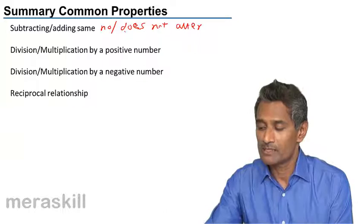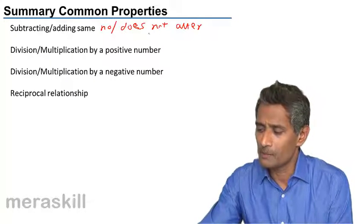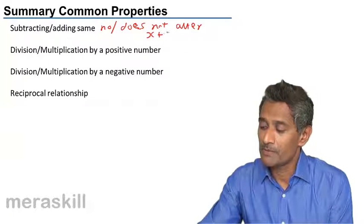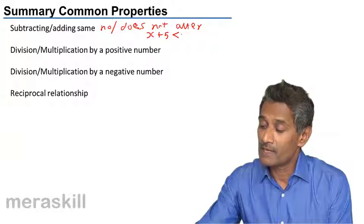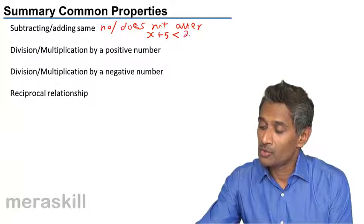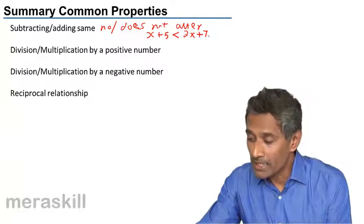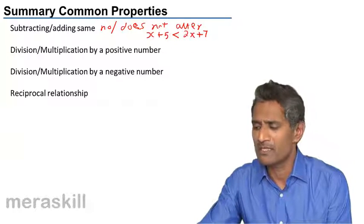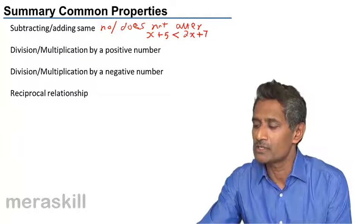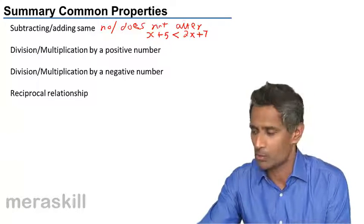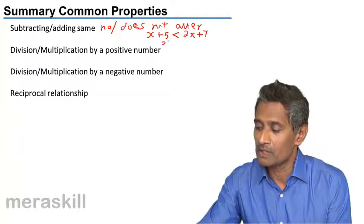The equation. So let's take a simple example: x plus 5 is less than 2x plus 7. You will subtract 5 from both sides, which means in effect you're taking this to the side and this to the side - you're just transposing it. So let's understand in effect what it means.